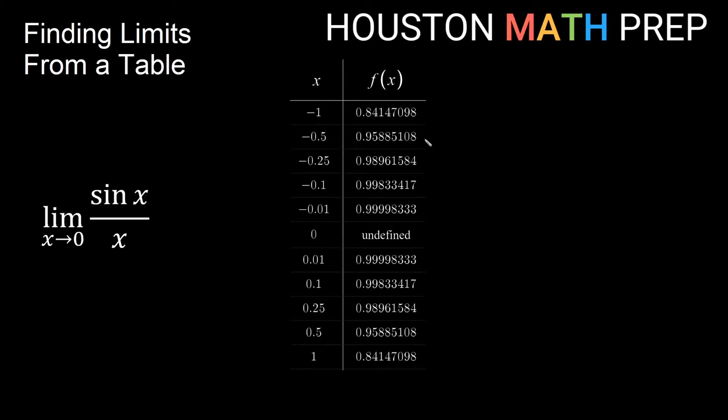So you can see my list of negative values as I'm getting closer and closer to x from the negative direction. You can see we have about 0.8, 0.95, 0.98, 0.99, 0.99, and some more nines. I sure do think we are heading toward a value of 1 as we get closer and closer to 0.